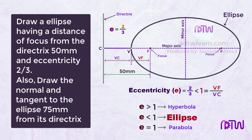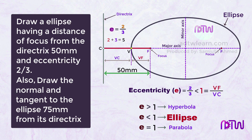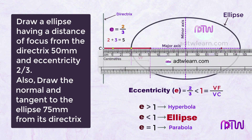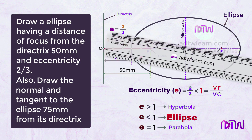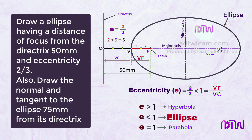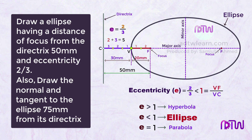The eccentricity is 2 by 3, and 2 plus 3 equals 5, meaning we divide the 50 millimeter distance into 5 equal parts. The length VF will be 2 parts and VC will be 3 parts. That means point V is 20 millimeters from the focus and 30 millimeters from the directrix.